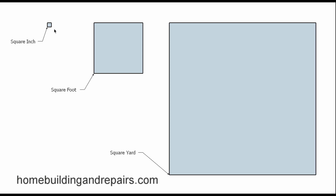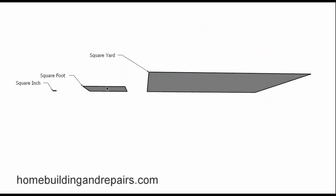A square is a four-sided, equally-sided object. A square foot has one foot on each side — they need to be equal sides to be a square, and they need to have 90-degree corners. A square yard would be one yard by one yard. A square is a two-dimensional object that exists on a plane or flat surface.